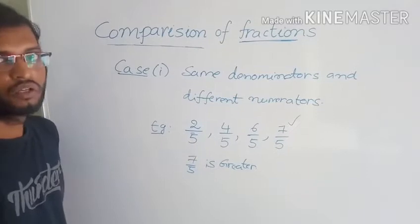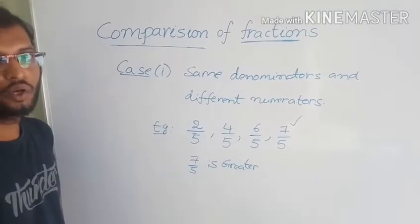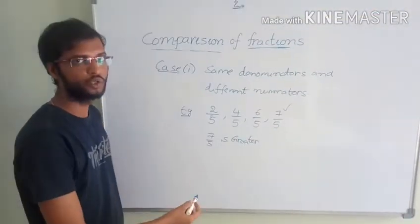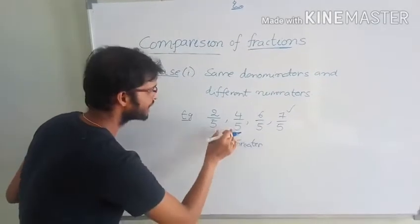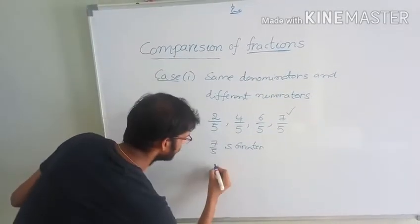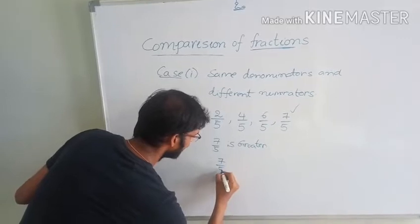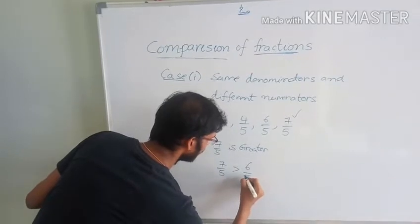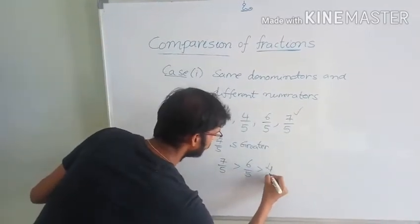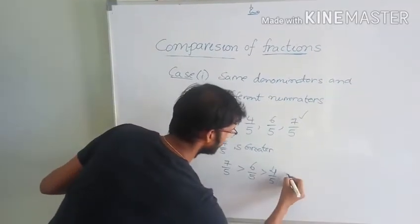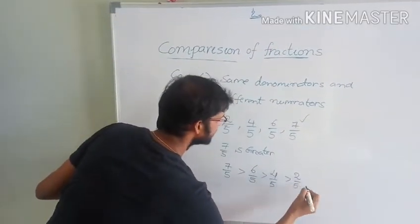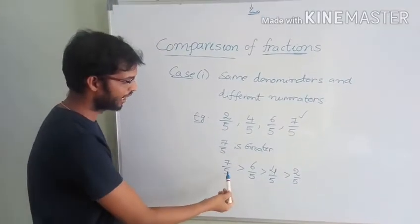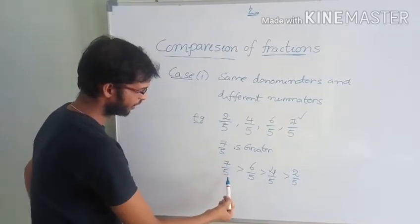Among these fractions, the problem is to write them in descending order. Descending order means greater value to smaller value. So: 7 by 5, then 6 by 5, then 4 by 5, then 2 by 5. This is the descending order — from greater value to smaller value.